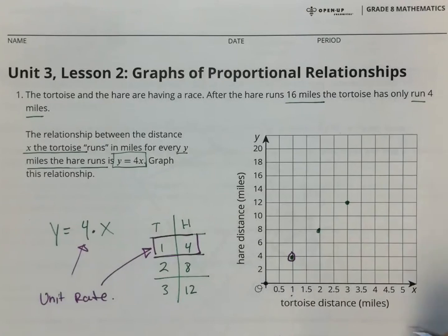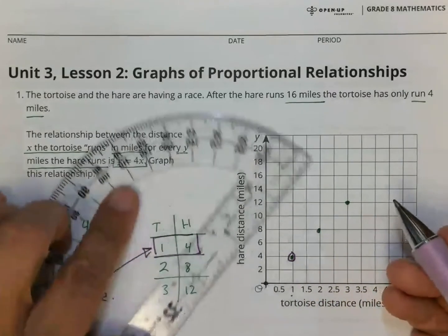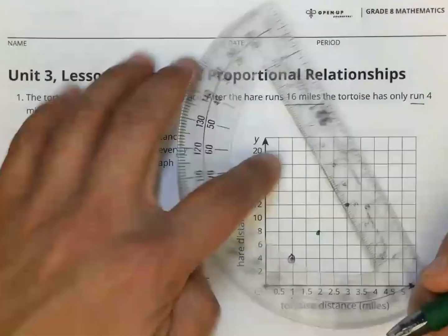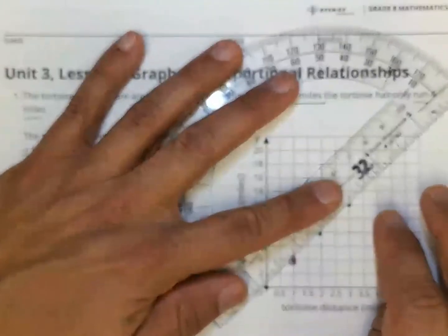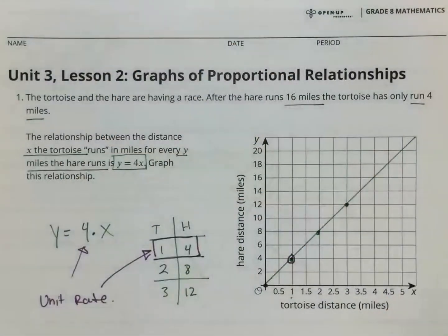And you know, zero, zero. And again, you see how all these points line up. So it's a different way. And then you're going to use a straight edge to draw the line. And that's the graph.